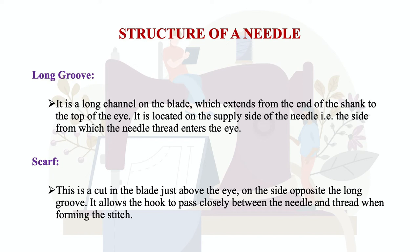The scarf is a cut in the blade just above the eye, on the side opposite the long groove. On one side of the needle it is cylindrical, and the other side has this flat cut. It allows the hook to pass closely between the needle and thread when forming a stitch — that is the main purpose of the scarf.